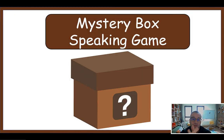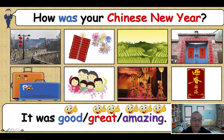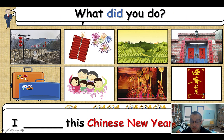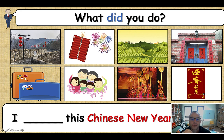Then we're going to play the mystery box speaking game, which is essentially the second half of the lesson — the last 15 or 20 minutes. It's a speaking activity, but it's a game because they can choose a mystery box. Here's how it works: you choose one student from one of the teams, and the whole class will say 'How was your Chinese New Year?' The student can choose — it was good, it was great, it was amazing. I tell my students they can use other adjectives if they want. Then the whole class says 'What did you do?' and you click this button to change the question.